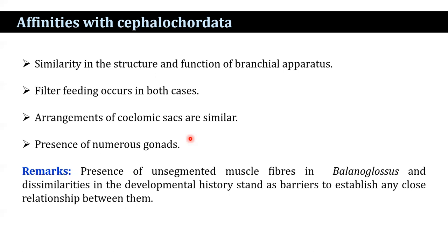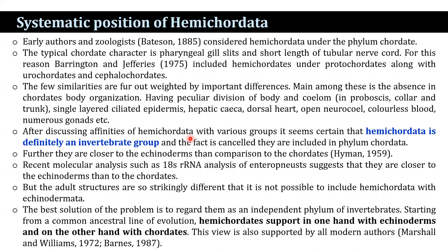Regarding the systematic position of Balanoglossus in the animal kingdom: early authors such as Vettison (1885) considered Hemichordata under phylum Chordata. However, this relationship cannot be justified on the basis of affinities between Hemichordata and Chordata. The typical chordate characters are pharyngeal gill slits and a short length of tubular nerve cord. Barrington and Jefferies (1975) included Hemichordates under protochordates along with urochordates and cyclostomes. The few similarities are far outweighed by important differences, chiefly the absence in chordates of the peculiar body division and coelom — proboscis, collar, and trunk — not found in chordates; also single-layered ciliated epidermis, hepatic caeca, dorsal heart, open coelom, colorless blood, and numerous gonads differ from chordates.